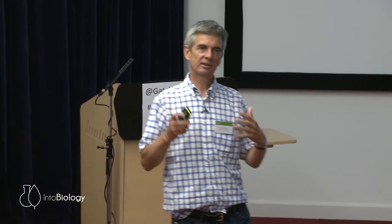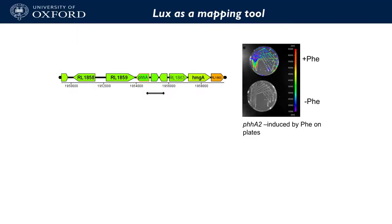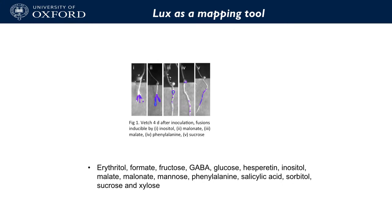We wanted a way to make our bacteria signal if they saw a particular metabolite. You probably know about promoters — genes get switched on by particular compounds. Here's an example with phenylalanine: the promoter for the phenylalanine hydroxylase gene gets switched on by phenylalanine and, if we hook it up to the LUX genes, we get light production. This is our bacteria on a petri dish with no phenylalanine versus with phenylalanine — a huge production of light when it sees phenylalanine. We could make these fusions to all sorts of compounds.